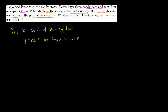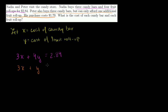Translating the statements into equations: Nadia buys three candy bars and four fruit roll-ups for $2.84, giving us 3x plus 4y equals 2.84. Peter buys three candy bars and one fruit roll-up for $1.79, giving us 3x plus y equals 1.79. Now we'll solve this using elimination.